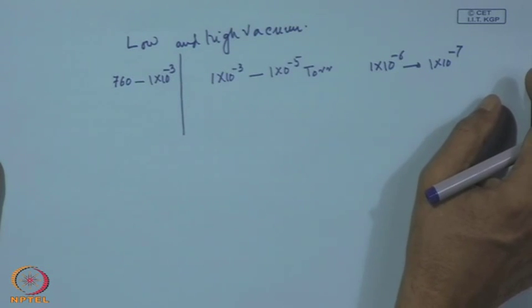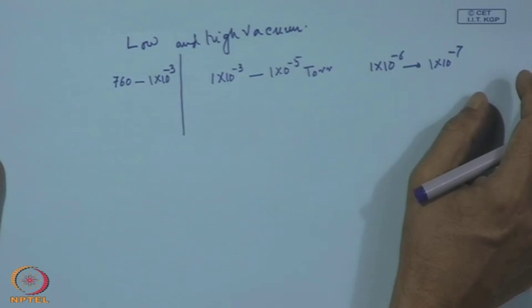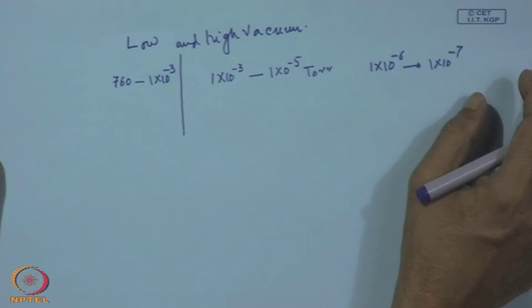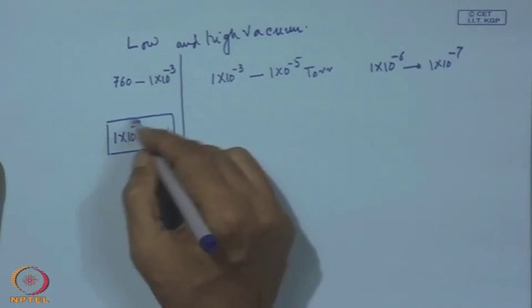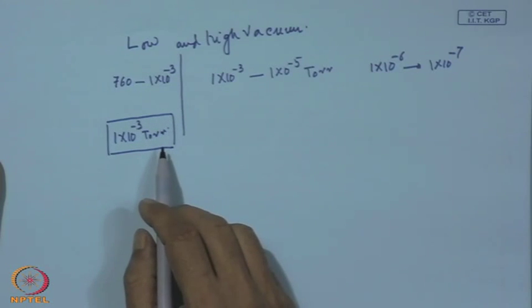For all routine processes — those we have discussed — in certain cases CVD requires a few tens of torr or a few hundreds of torr. During the process we have to maintain a pressure of a few tens or hundreds of torr. However, there must be a pre-vacuum to remove air and oxygen, so pre-evacuation should be done in the order of at least 10⁻³ torr. For all routine CVD, this is just the pre-vacuum — pre-evacuation of the reactor before we can really start the process.